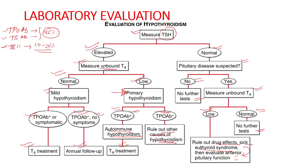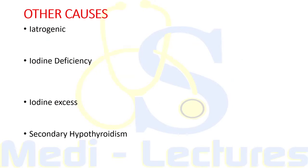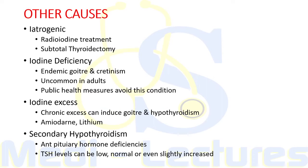Other causes of hypothyroidism include iatrogenic causes, iodine deficiency, iodine excess, and secondary hypothyroidism. Iatrogenic hypothyroidism can follow radioiodine treatment and subtotal thyroidectomy; it can be seen in the first three to four months after radioiodine treatment and is usually transient due to reversible radiation-mediated damage. After subtotal thyroidectomy it may resolve after several months as the gland remnant is stimulated by increased TSH levels.